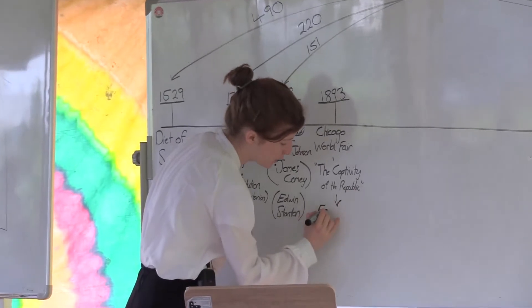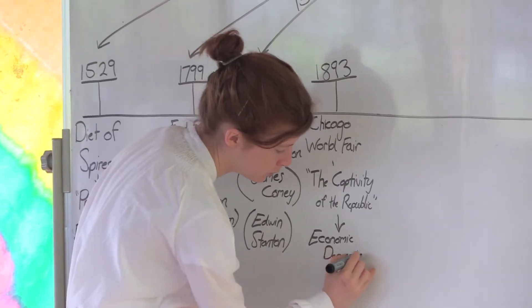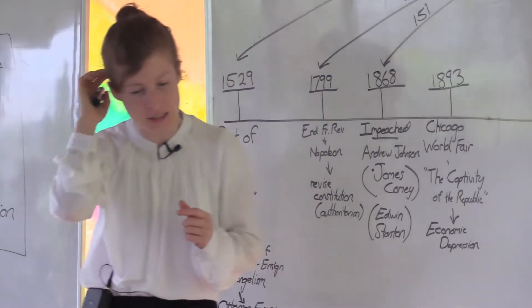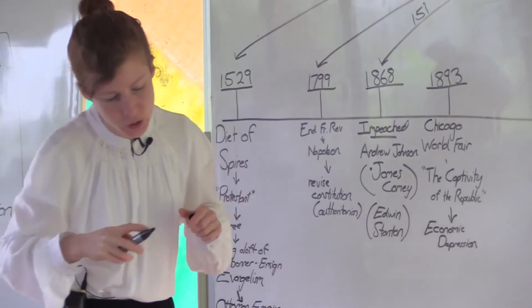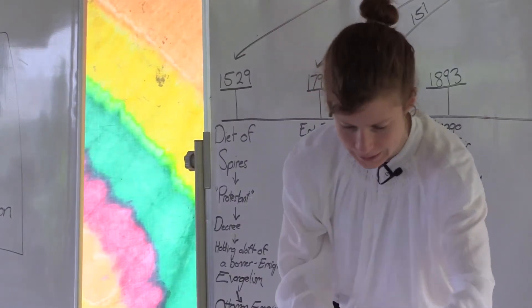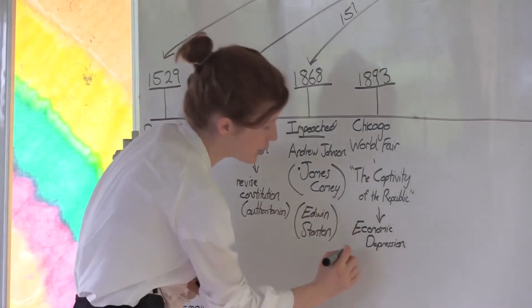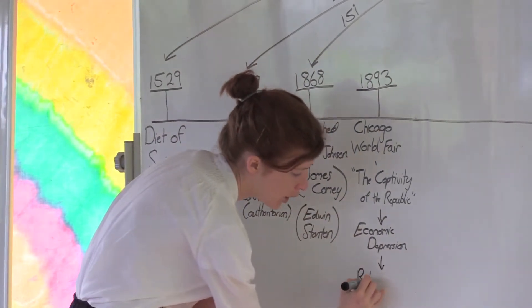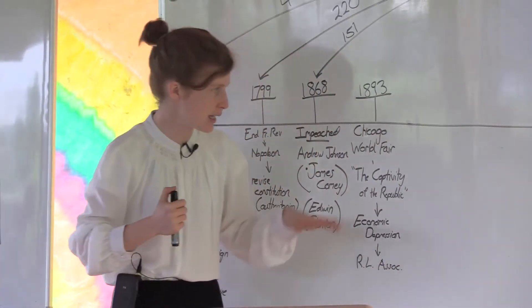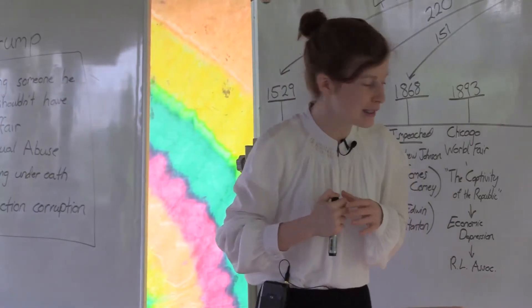We also see in this year an economic depression that's claimed to be due to the rise of populism, nationalism, and the other thing that you can mark is the beginning of the religious liberty association. Because of these Sunday laws that were being introduced in 1893, the Adventist church set up the religious liberty association.